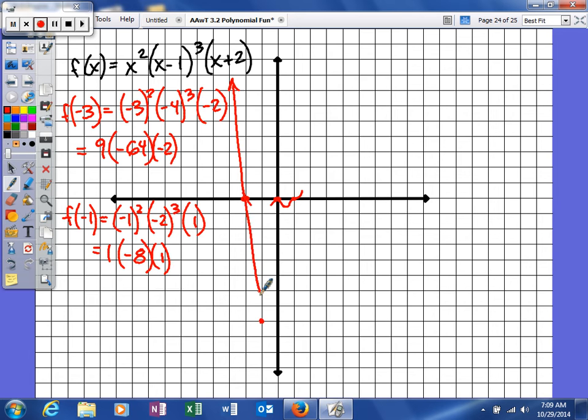So our graph will look a little something like this. It will cross the x-axis there. Whoops, let me start over. I was in my line of sight. So that graph will look a little something like that. It's going to cross right through this one, it's going to bounce off this one. And I'll plug in 2 just to kind of see what we get, see if it's close to being on the graph or not.